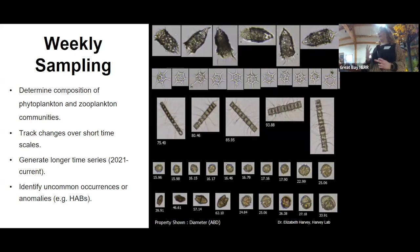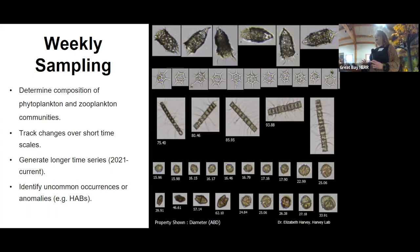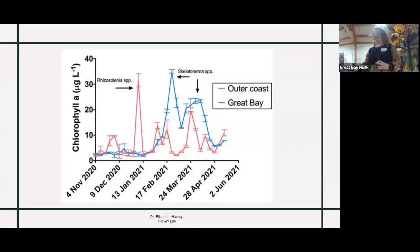We have a really strong time series starting in 2021, and we do have results from before then as well, but it will essentially allow us to look at seasonality changes over a long period of time. It's also useful in identifying uncommon occurrences or anomalies, which is super useful when it comes to harmful algal bloom species.